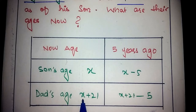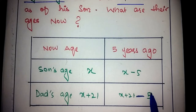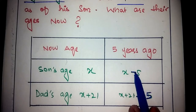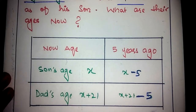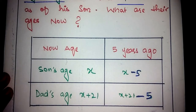If the dad's age now is X plus 21, then 5 years ago it was X plus 21 minus 5. The minus 5 accounts for the previous time. Now we have equations for the present ages and for the ages 5 years ago.